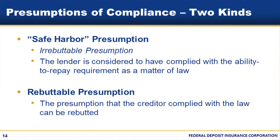You may already be familiar with the rebuttable presumption. The prior higher-priced mortgage loan ability to repay rule offered creditors a way to create a rebuttable presumption, but there was no safe harbor prior to these new rules. What distinguishes a safe harbor QM from a rebuttable presumption QM? The answer is the APR on the loan.